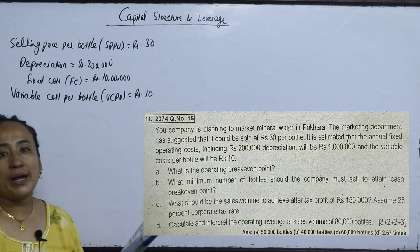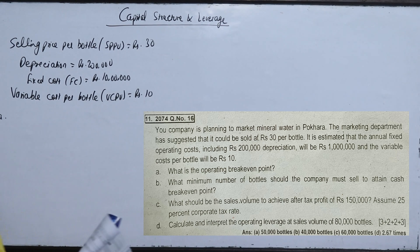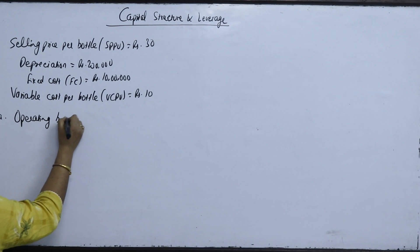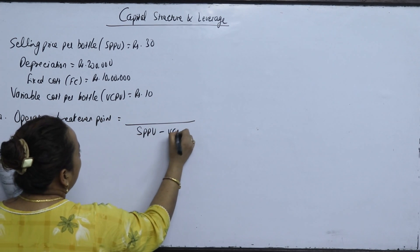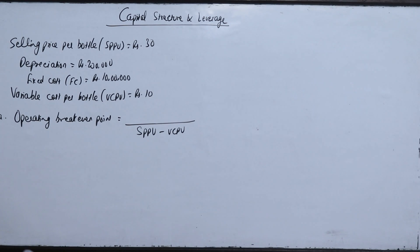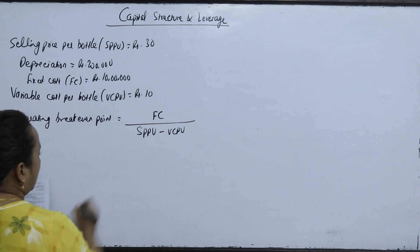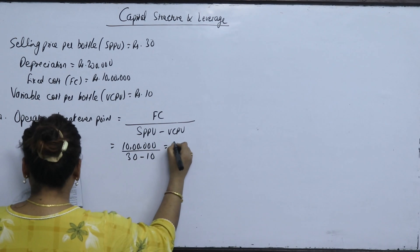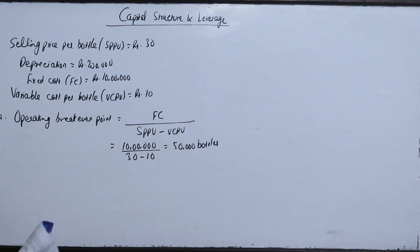What is the operating break-even point? The formula for break-even point in units is: Fixed Cost divided by (SP per unit minus VC per unit), which is the contribution margin per unit (CMPU). So: 10,00,000 divided by (30 minus 10) = 10,00,000 divided by 20 = 50,000 bottles.